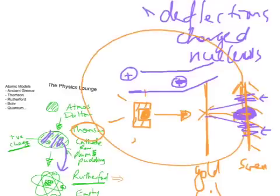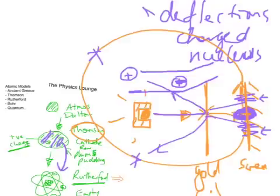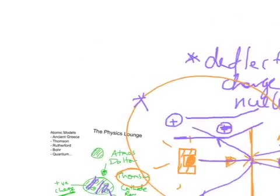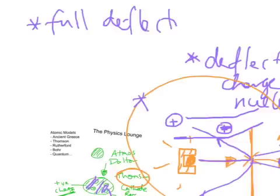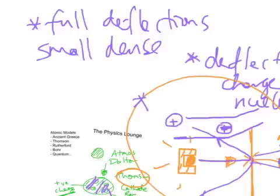And what they noticed was that some of the particles would actually be deflected so that they're coming out from the source and they're actually deflecting in crazy directions like this, actually bouncing right off. Not very many of them, mind you, but enough. So these full deflections, they told Rutherford that there was a small, dense nucleus.